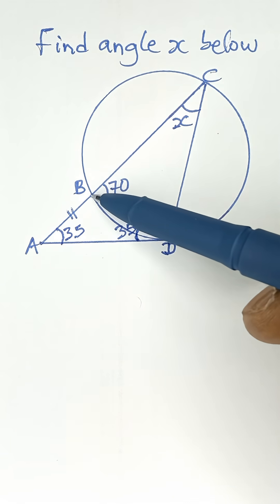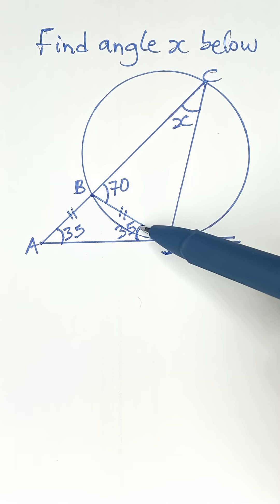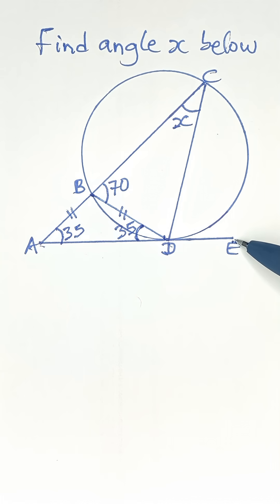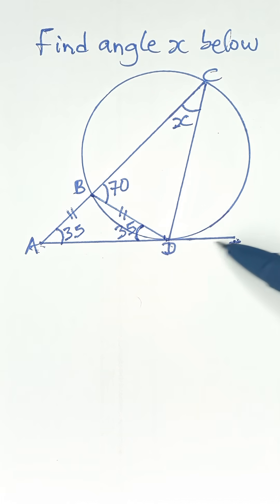A tangent is an external line that touches a circle. This chord BD makes a 35-degree angle with the tangent, so the opposite angle that this chord makes inside the circle is also 35.